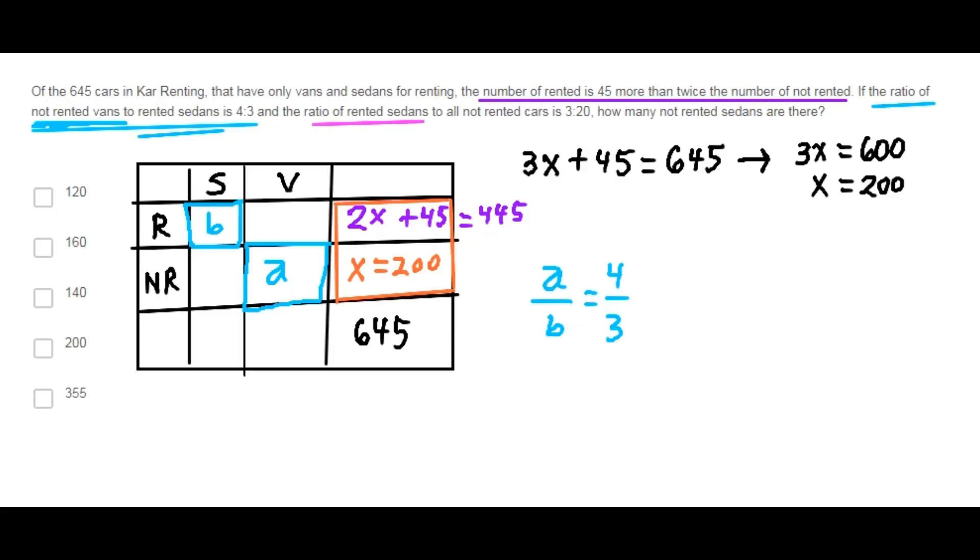The ratio of rented sedans to all not rented cars is 3 to 20. Solving for B, B equals 30.